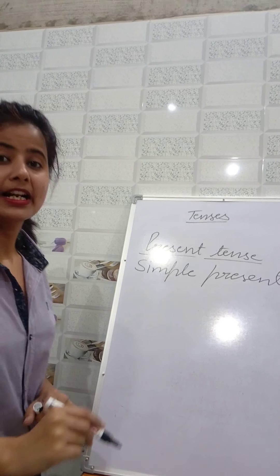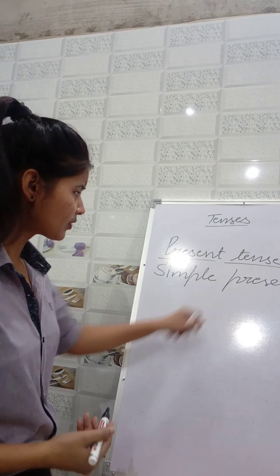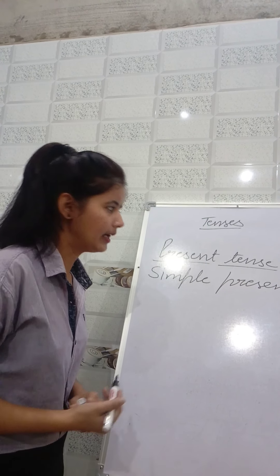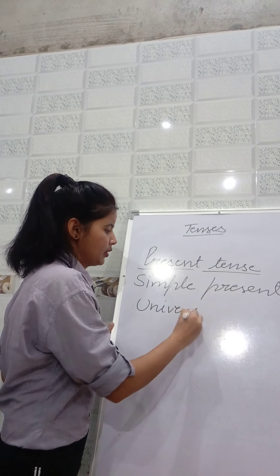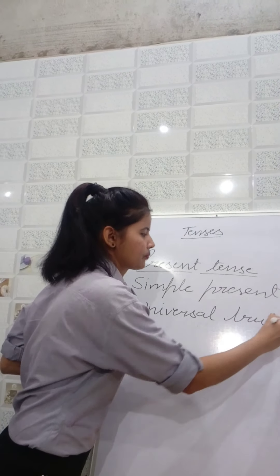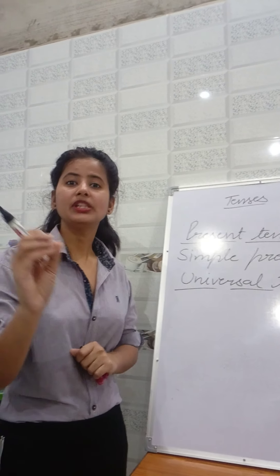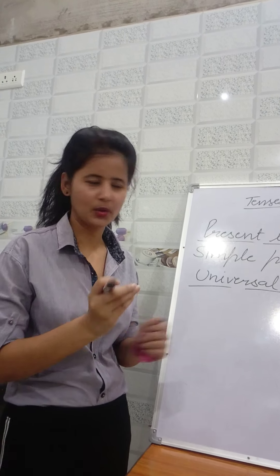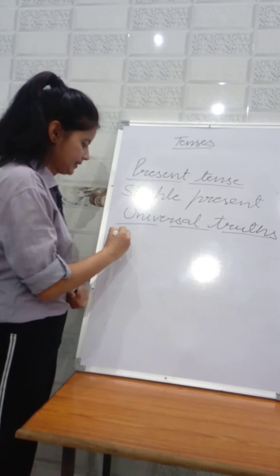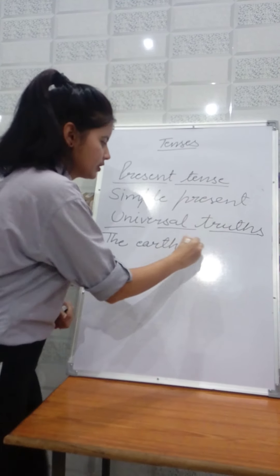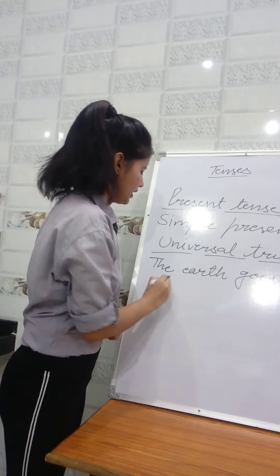First of all, we are going to look at the uses of simple present tense, and then we will see how to use simple present tense in sentences. The first use is: we use simple present tense for universal facts or universal truths. Universal truths are facts made by nature that we cannot change — for example, the earth goes round the sun.